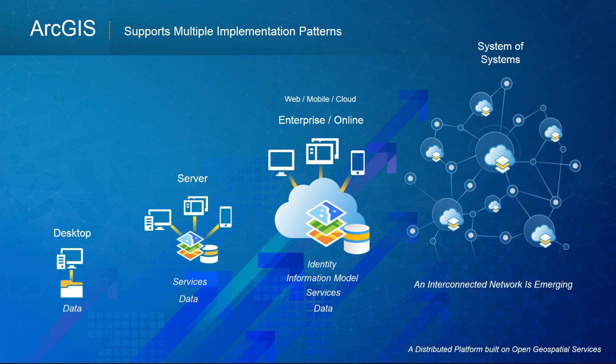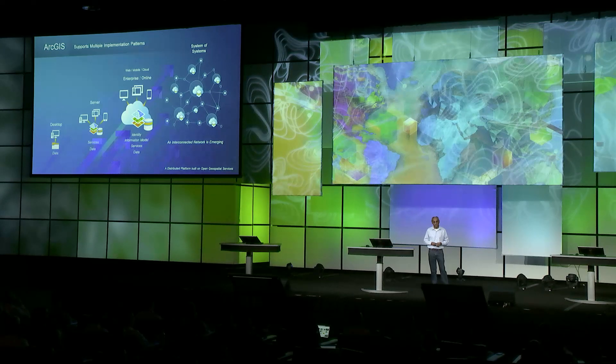To summarize: ArcGIS supports multiple implementation patterns. You could have standalone desktops working with information, servers that serve geospatial services, or complete deployments of the full platform based on ArcGIS Online or ArcGIS Enterprise. Increasingly, these systems are being connected to each other, leading to a system of systems — an interconnected network. ArcGIS is truly distributed.